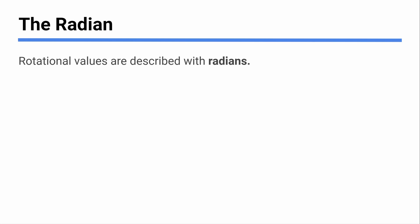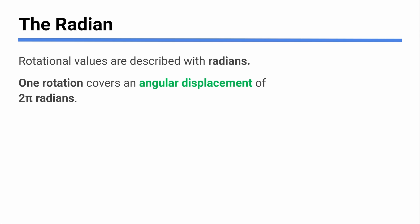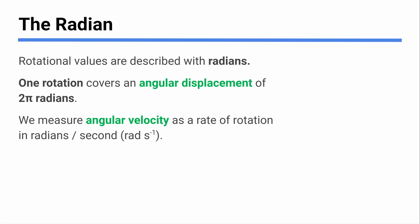Our measurement system here won't use linear distances in meters — we measure angles, and we use the radian. You want to make sure you're okay with radians. Definitely know that one rotation is two pi radians — 360 degrees going all the way around a circle is two pi radians. We're going to measure angular velocity as a rate of rotation in radians per second, which you can think of as an angular displacement over time.